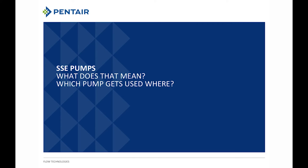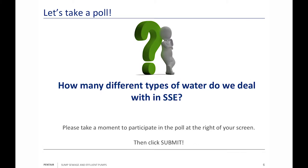We are now going to talk about SSE pumps, and of course the question comes up: what does that mean, and which pump gets used where? So those are the questions we're going to answer today. Now, how many different types of water do we deal with in SSE? The answer is four — four different types of water. We're going to look at some definitions, and in this first page of definitions we're going to see those four different kinds of water.